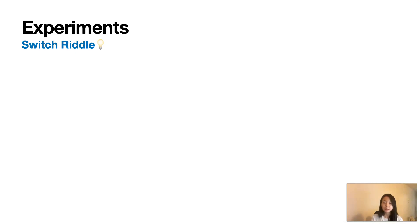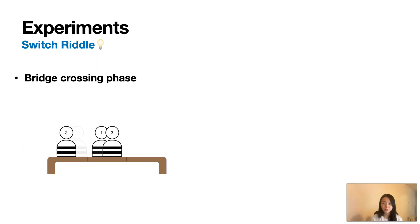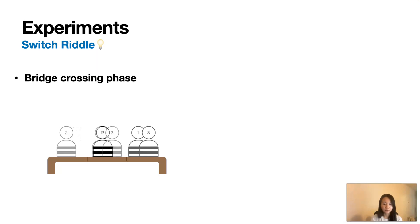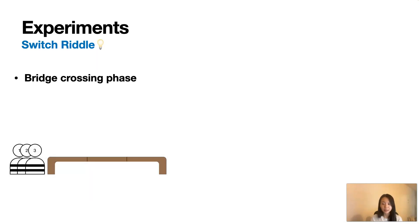The first task is the switch riddle with bridge, which contains two phases. During the bridge crossing phase, agents choose to either go left, right, do nothing, or terminate the episode. The agents will only move on to the game-playing phase when all agents end up on the right side of the bridge.